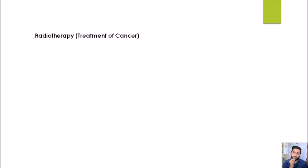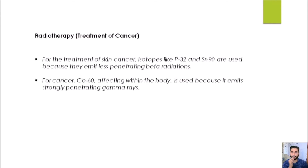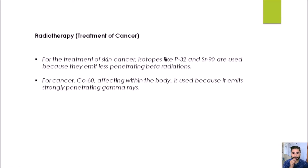The first use of isotopes is radiotherapy — a treatment of cancer. For treating skin cancer, we use Phosphorus-32 and Strontium-90, because they produce very low-penetrating beta radiations. Cobalt-60 produces very strong gamma rays with a high amount of energy; when they hit tumor cells or cancer cells, they are used to kill those cells. So cobalt-60 kills cancer cells via gamma rays, while Phosphorus-32 and Strontium-90 are used to treat skin cancers.